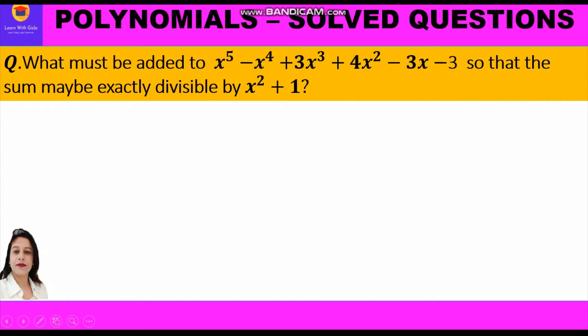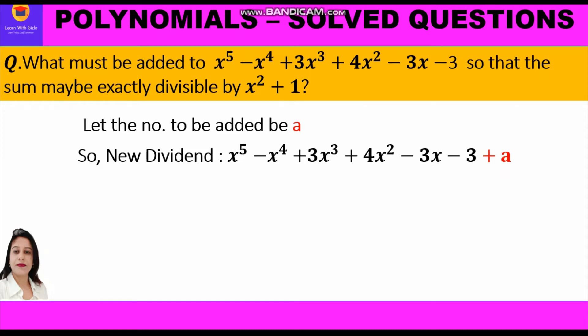The polynomial question is: what must be added to x⁵ - x⁴ + 3x³ + 4x² - 3x - 3 so that the sum may be exactly divisible by x² + 1? Let us assume the number to be added is a, so the new dividend is x⁵ - x⁴ + 3x³ + 4x² - 3x - 3 + a, and the divisor is x² + 1.